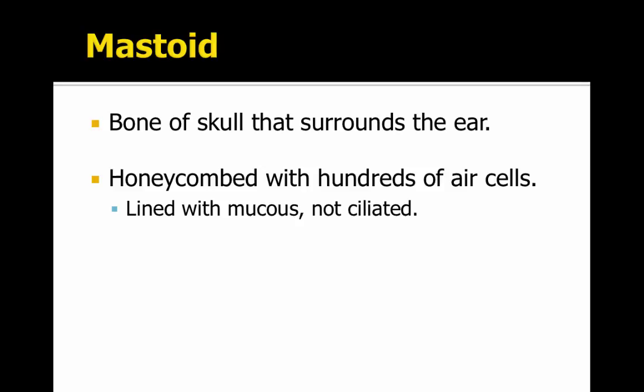The bones of the skull that surround the middle ear are called the mastoid bone. It's honeycombed with hundreds of air cells that are lined with mucus but not ciliated.